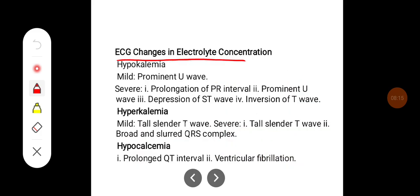ECG changes in electrolyte concentration. In hypokalemia, mild hypokalemia leads to prominent U wave, whereas in severe hypokalemia there can be prolongation of the PR interval, prominent U wave, depression of the ST wave, and inversion of the T wave.